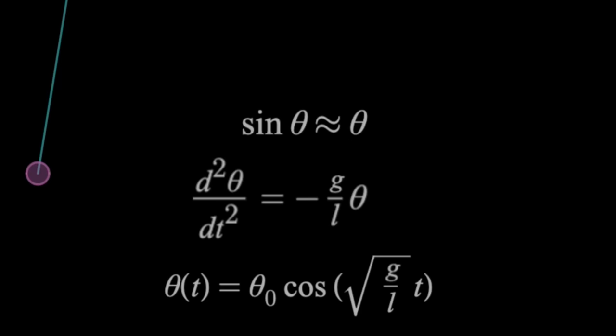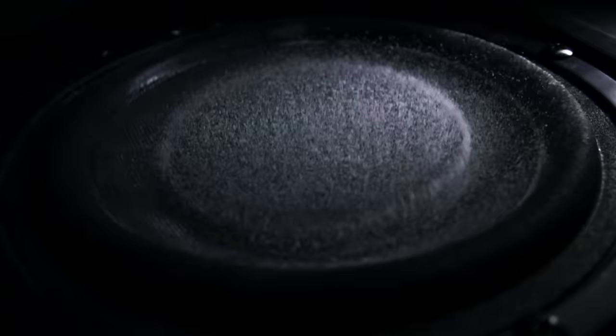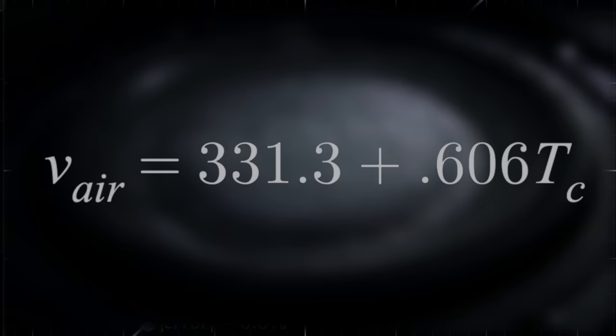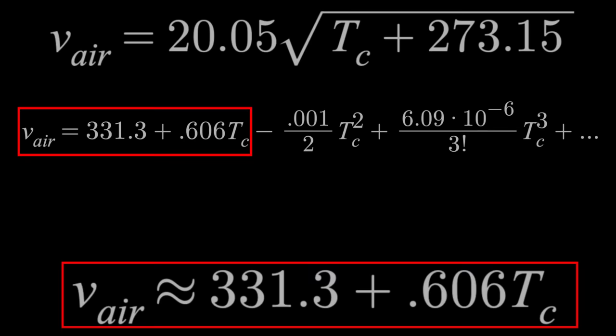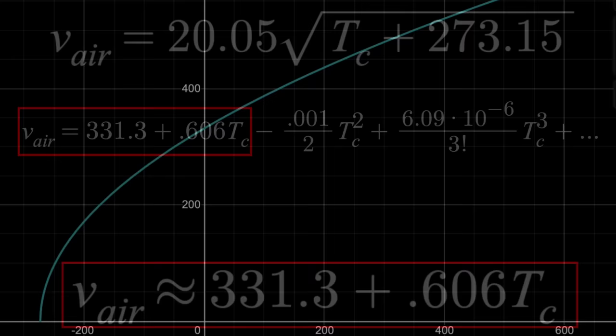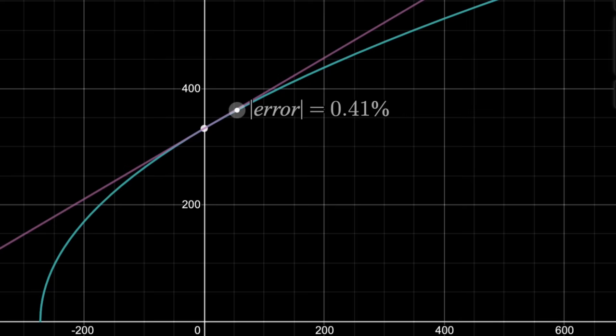Taylor series also show up outside of differential equations though. If you've taken a first year physics course, you may have learned that the speed of sound in air is determined by this equation here, where t is the temperature in Celsius. This is only an approximation though that comes from this equation. So how do we get the approximation? We find the McLaurin series for the more accurate equation up top, and then just use the first two terms. So yes, another tangent line approximation that will work around t equals zero. Graphically, you'll find the percent error between the actual velocity equation and the linear approximation only reaches about 0.5% once you get to roughly 60 degrees Celsius. So for typical everyday temperatures, the approximation is pretty accurate.